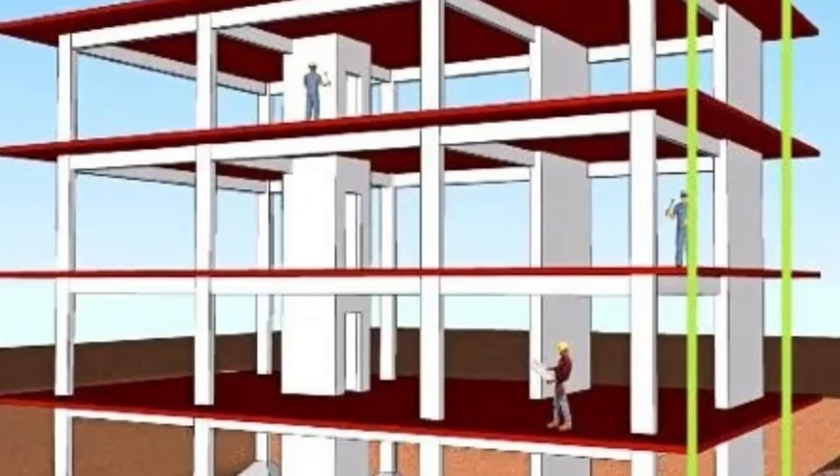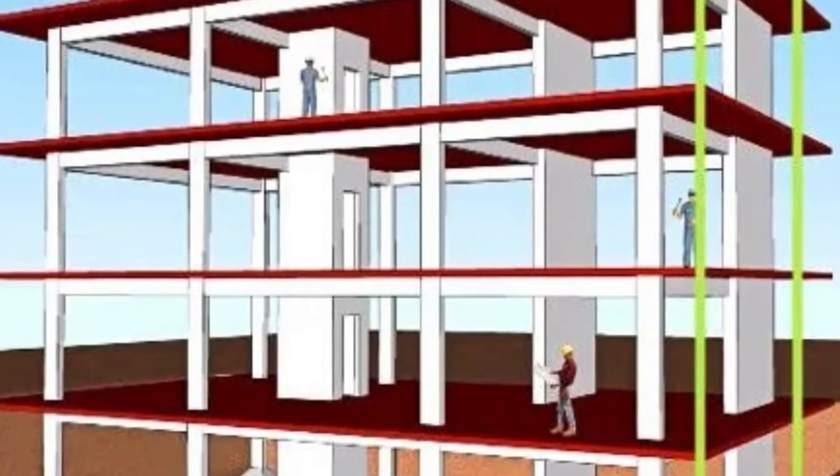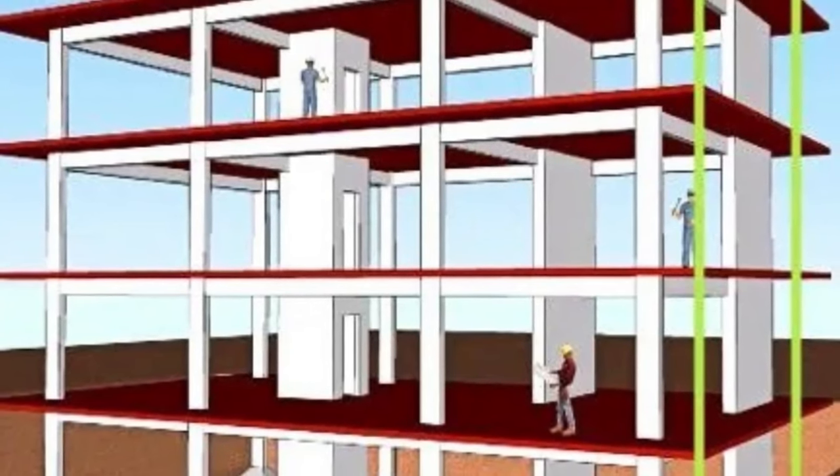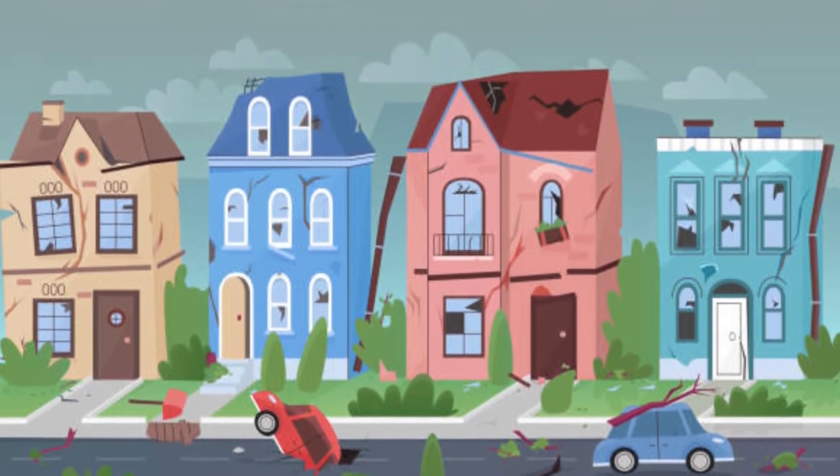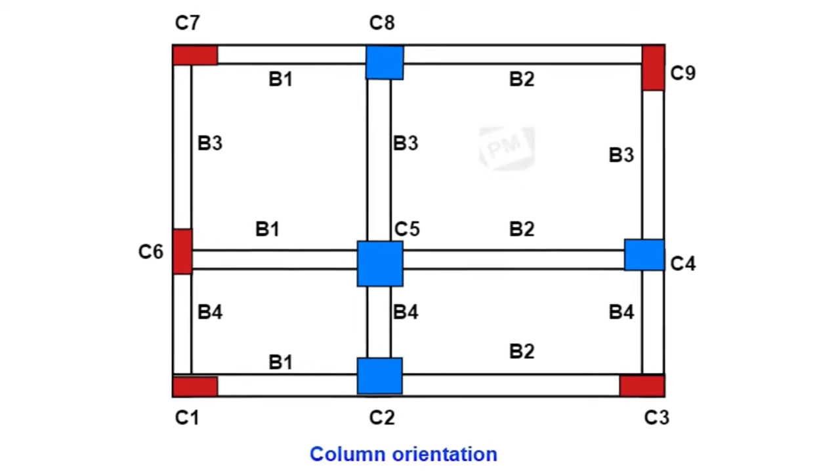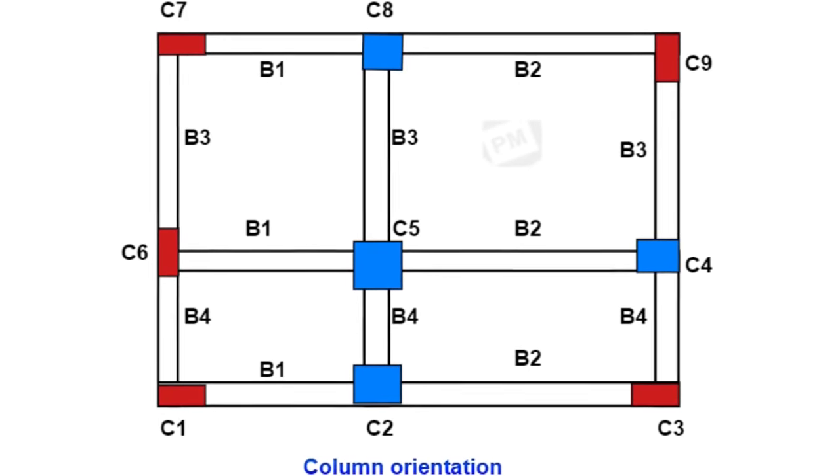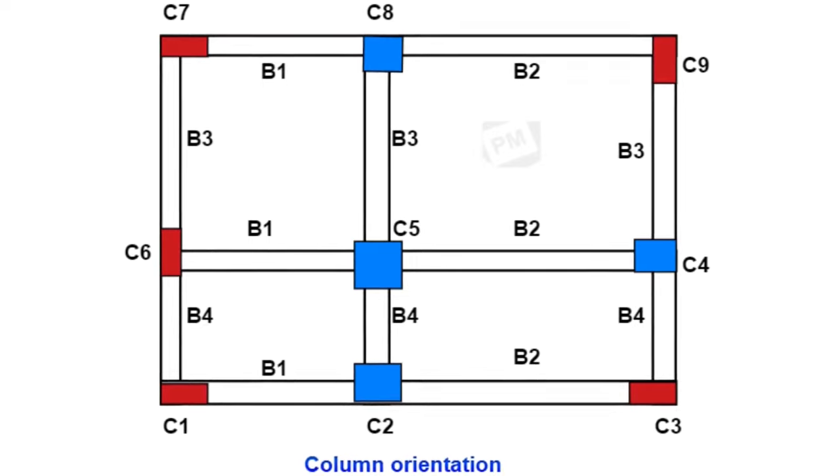Shear walls may be needed in low-rise buildings based on various factors. It may depend on if your low-rise building of four stories is in a seismic zone. It may depend on the number of columns and their position. It may also depend on the size and orientation of the columns.